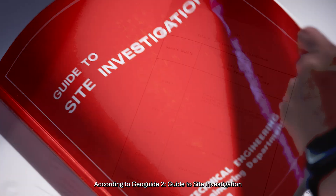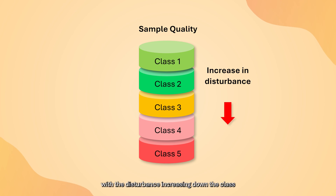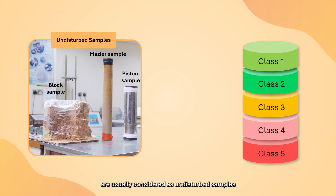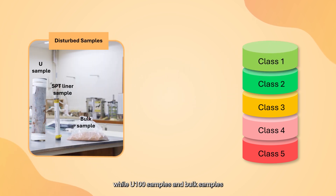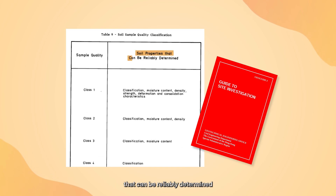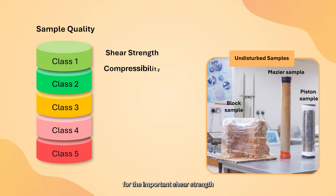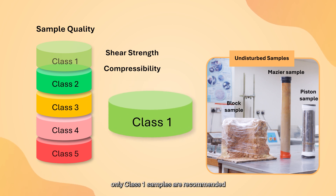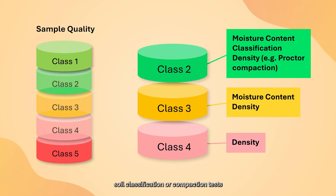According to GeoGuide 2, Guide to Site Investigation, sample quality is categorized into five classes — class 1 to class 5 — with disturbance increasing down the class. For example, Mazier, piston, and block samples are usually considered undisturbed samples, with class 1 samples being obtained. While U100 samples and bulk samples are normally classified as disturbed samples, because only class 2 or below samples can be obtained. Table 9 of GeoGuide 2 lists the soil properties that can be reliably determined from samples of different quality classes. For the important shear strength and compressibility properties, only class 1 samples are recommended. Samples in the lower quality classes are used for moisture content, soil classification, or compaction tests.